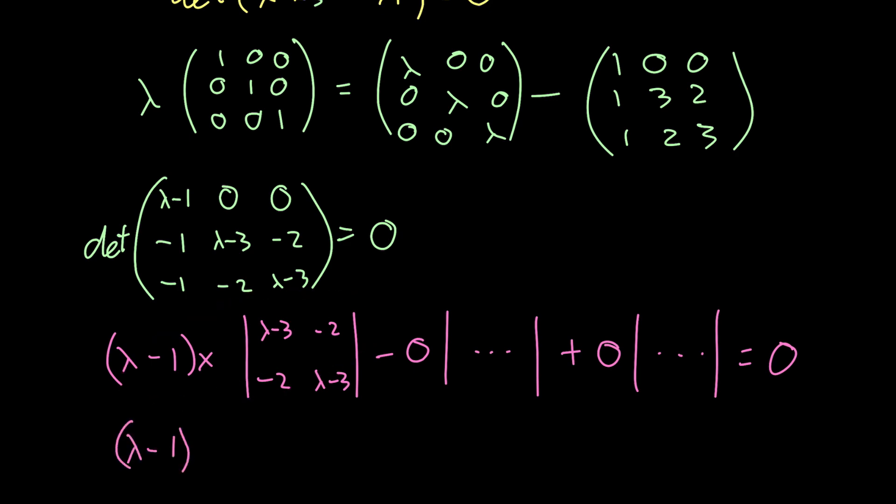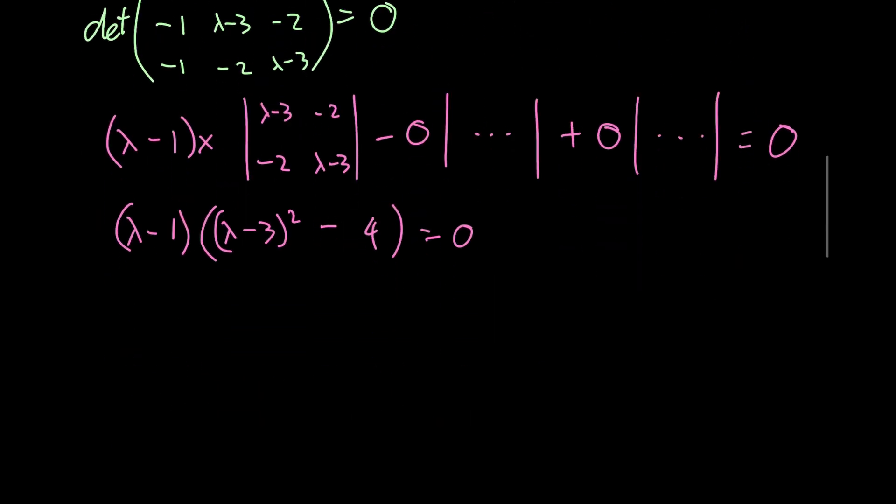We have lambda minus 1 into lambda minus 3 squared, those two multiplied by each other, minus those two multiplied by each other. So minus 2 times minus 2 is 4. So it's minus 4. And that must be equal to 0.